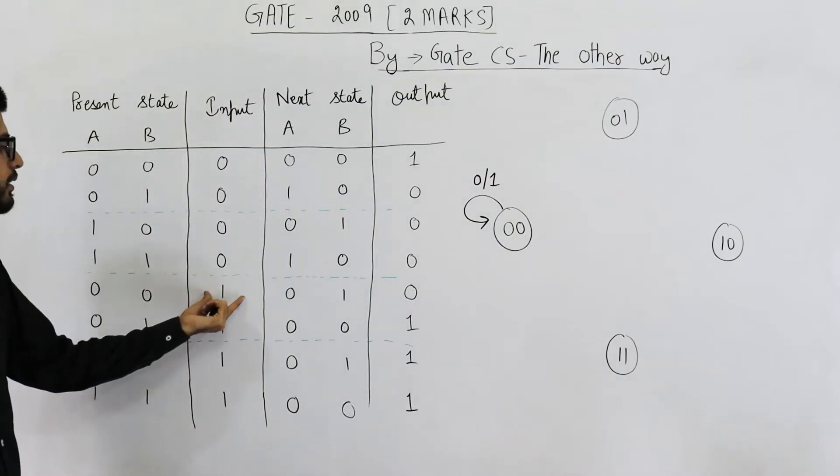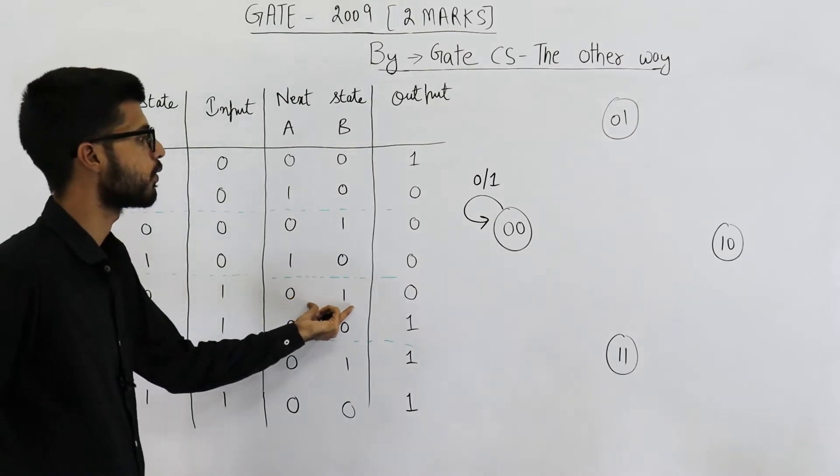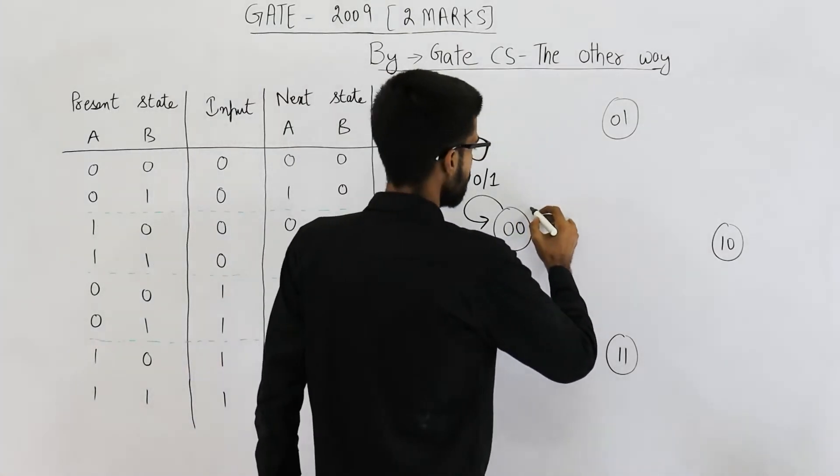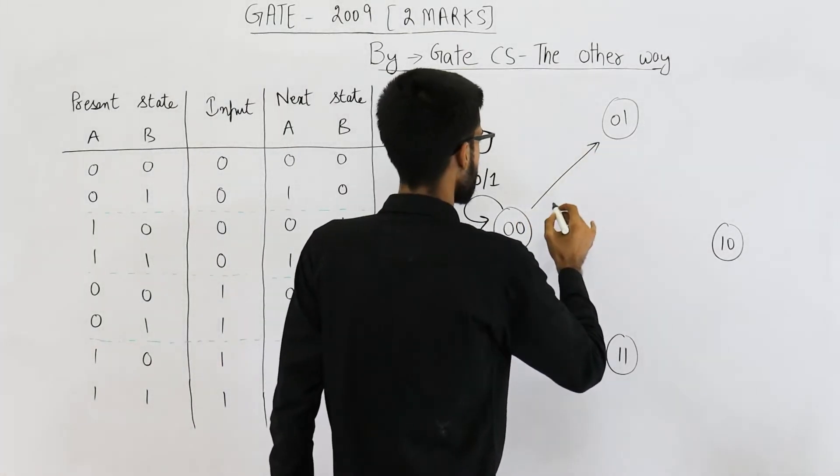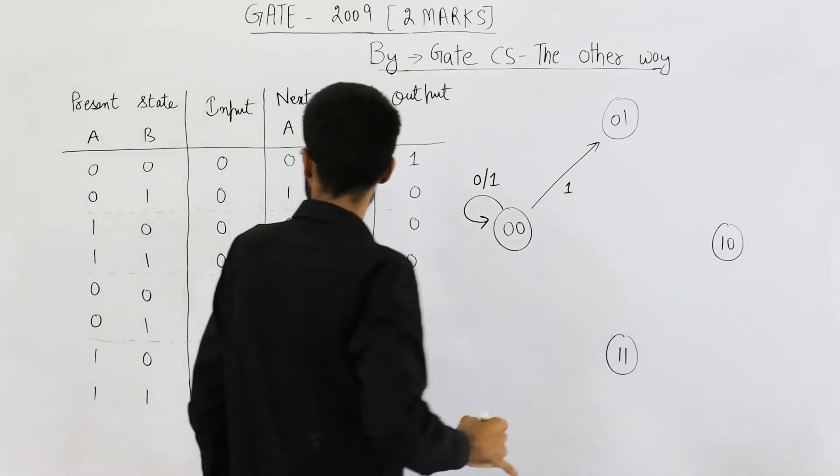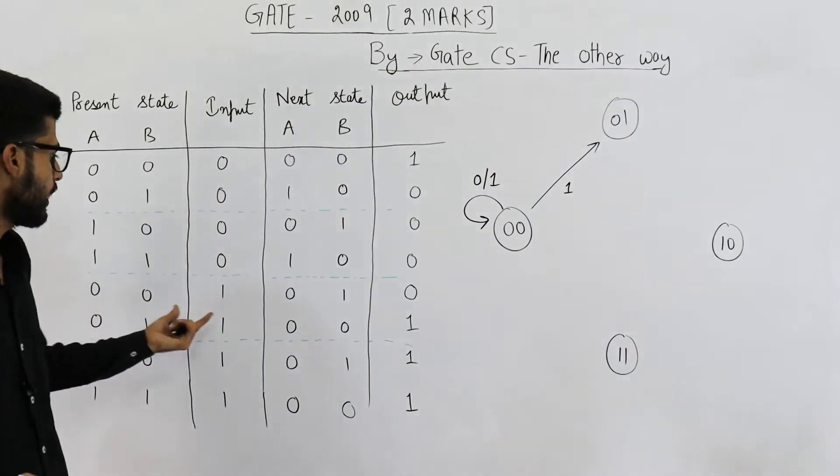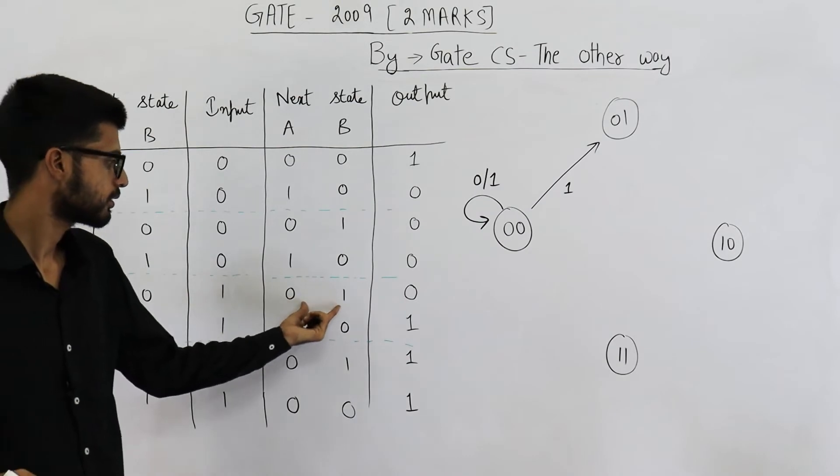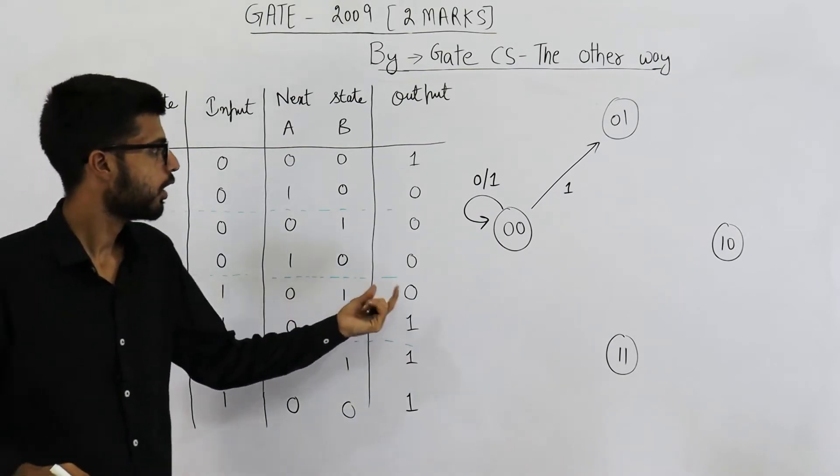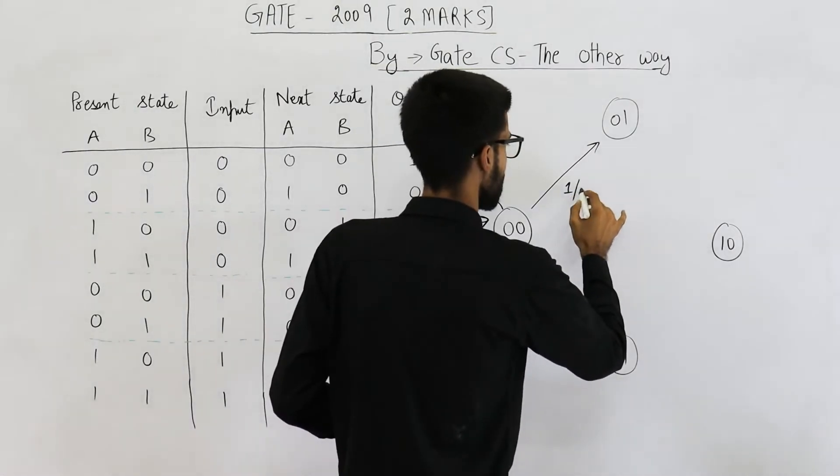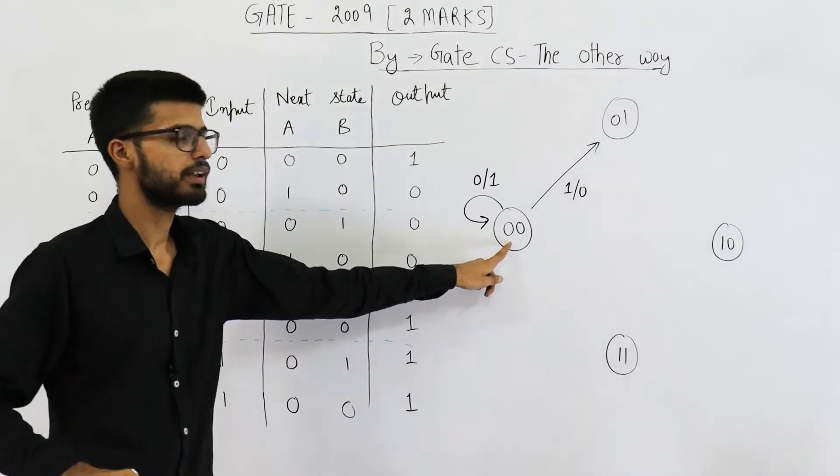And this state upon seeing a 1 will go to state 0,1. So we'll draw such a transition. 0,0 and input is 1. Next state is 0,1, output is 0. So slash 0. Now we have completed this state.